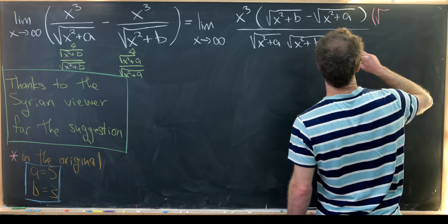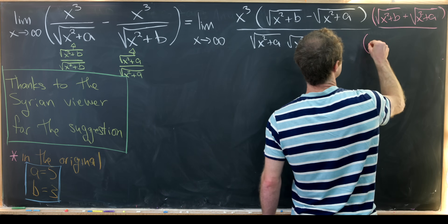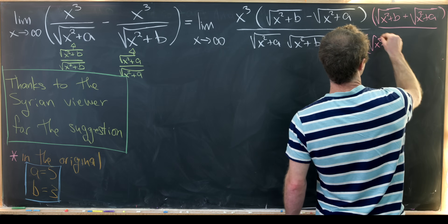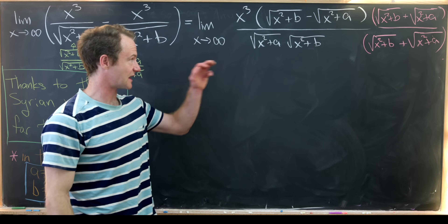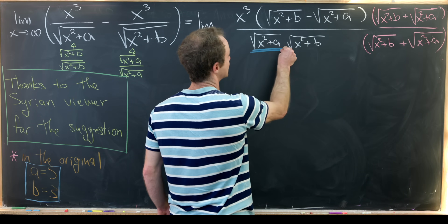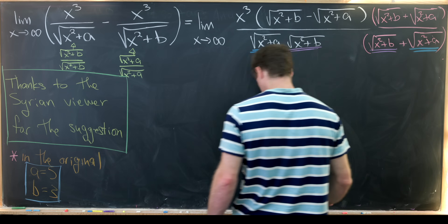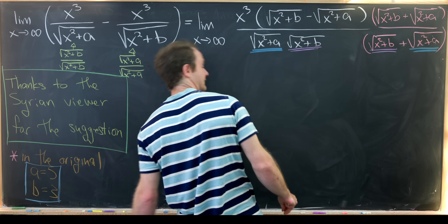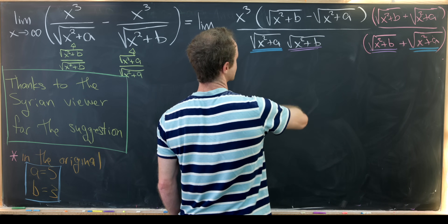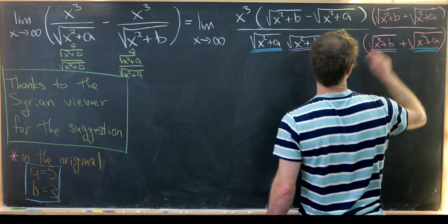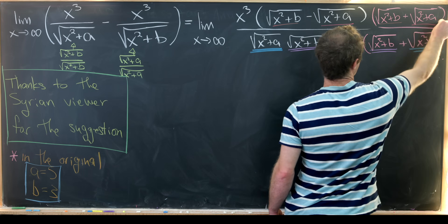The radical conjugate is the square root of x squared plus b plus the square root of x squared plus a. We multiply both the numerator and denominator by this. In the denominator we get simplification: x squared plus a multiplying into x squared plus a, and x squared plus b multiplying into x squared plus b. In the numerator we have a difference of squares — something minus something times the same thing plus something — giving us the brown term squared minus the red term squared.